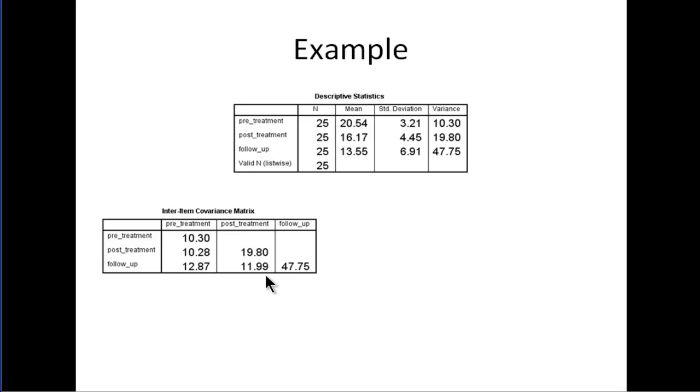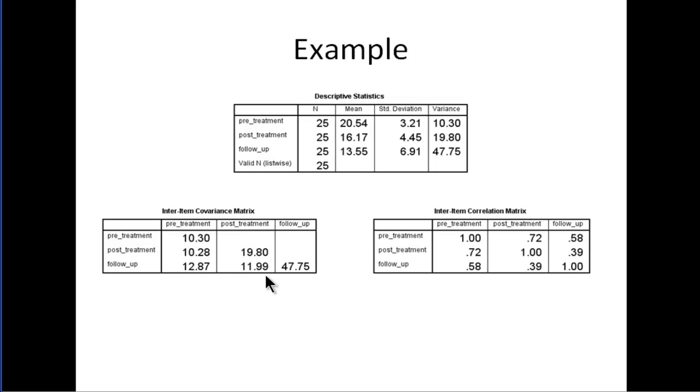Now the assumption of sphericity is based on covariances, but intuitively it's probably better to think about correlations in this context. What you see in practice is that the levels that are closer together tend to have a higher correlation with each other and a higher covariance.